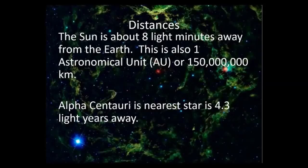So the sun is about eight light minutes away. A light minute is how far light can travel in one minute. So eight light minutes is also one AU. If the sun were to explode or suddenly disappear, we wouldn't know about it for eight minutes. Alpha Centauri is the nearest star to us, and it's 4.3 light-years away. If Alpha Centauri exploded or disappeared, we wouldn't know about it for 4.3 years.